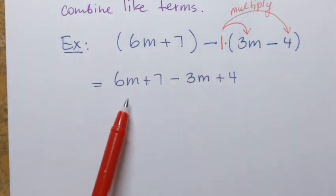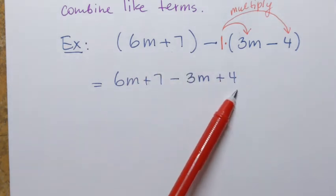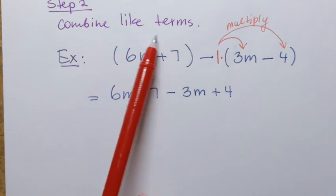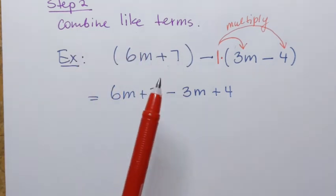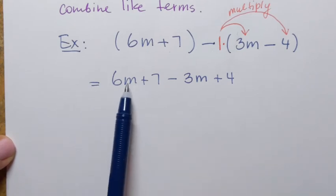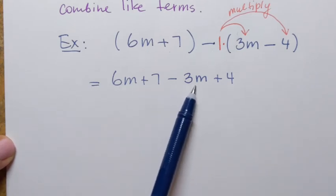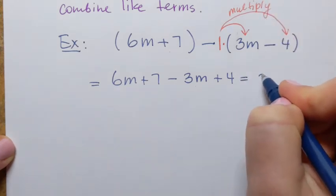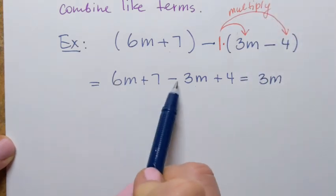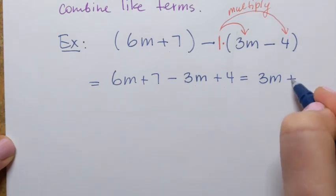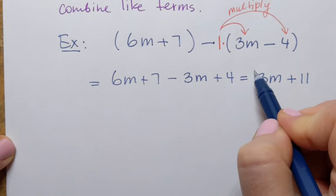That's the way to clear the parentheses when subtracting polynomials. After that, step two is combining like terms. The like terms are 6m and negative 3m: 6m minus 3m is 3m, because it's 6 minus 3. And then 7 plus 4 gives me 11, plus 11. And that's the answer.